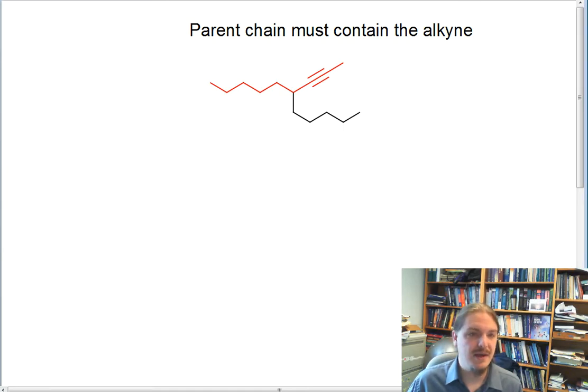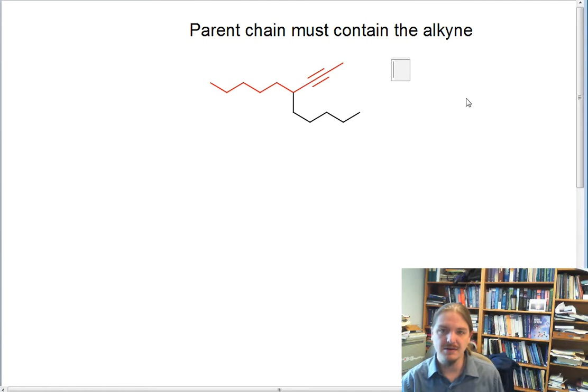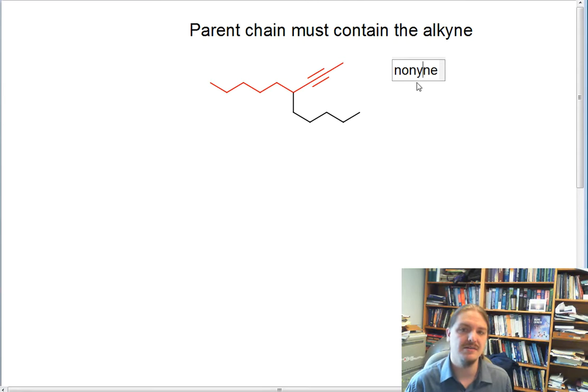We're going to name that parent chain. Since the parent chain has nine carbons in it, if it were an alkane, we would name it nonane. But because it has an alkyne in it, we replace the A with a Y. So this is some kind of nonyne.